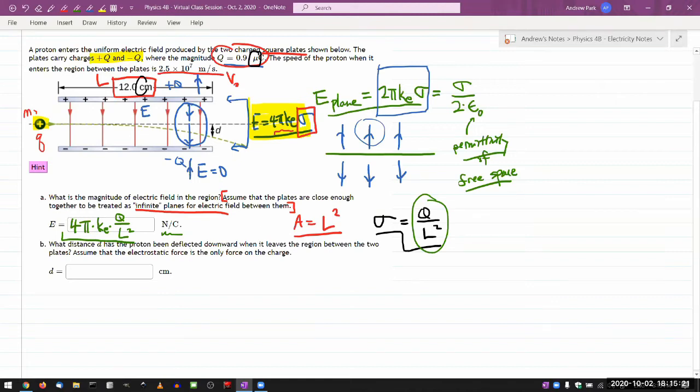Okay, and it says, what distance d has the proton been deflected downward when it leaves the region between the two plates? Assume that the electrostatic force is the only force on the charge. So I hope as you see the trajectory here, and as you think about the information being given, that I hope this reminds you of some of the projectile motion questions from Physics 4A. And that's really exactly what this is.